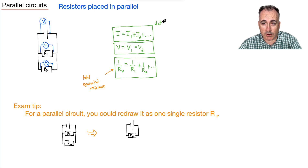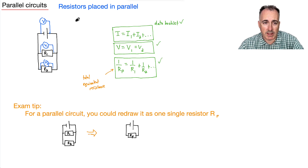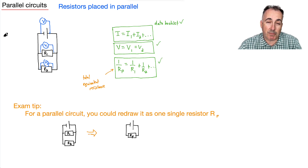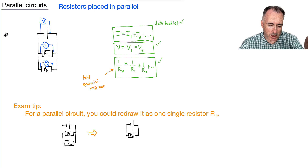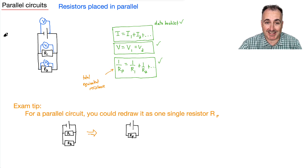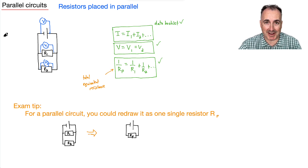This is also in your data booklet, which is good — so you don't need to memorize these. You have all three of these equations. Now we can put it all together by considering entire circuits. If you understood and followed what we've been talking about, you actually have everything you need — this is how I can solve pretty much every circuit question.